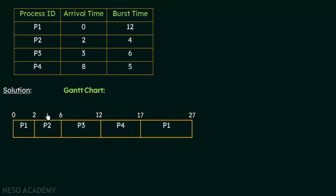P2 is now executing, and P3 arrives at time 3 with a burst time of 6 milliseconds. At the third millisecond, P2 has completed one millisecond of execution, so its remaining time is now 3 milliseconds. Since P3's burst time of 6 milliseconds is greater than P2's remaining 3 milliseconds, P2 will not be disturbed. P2 continues execution up to the sixth millisecond, since 2 plus 4 equals 6.